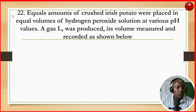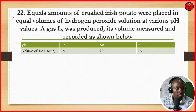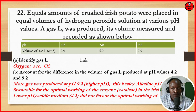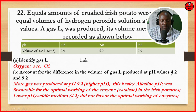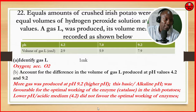Equal amounts of crushed Irish potato were placed in equal volumes of hydrogen peroxide solution at various pH values. A gas L was produced and its volume measured: at pH 4.2, volume was 2.9; at pH 7, it was 5.9; at pH 9.2, it was 7.9. Identify gas L — that is oxygen (O₂). Account for the difference in volume at pH 4.2 and pH 9.2: more gas was produced at pH 9.2 — this alkaline pH favored the optimum working environment for the enzyme catalase in the Irish potatoes. At low acidic pH 4.2, conditions did not favor optimum enzyme activity, hence the low volume of gas L.